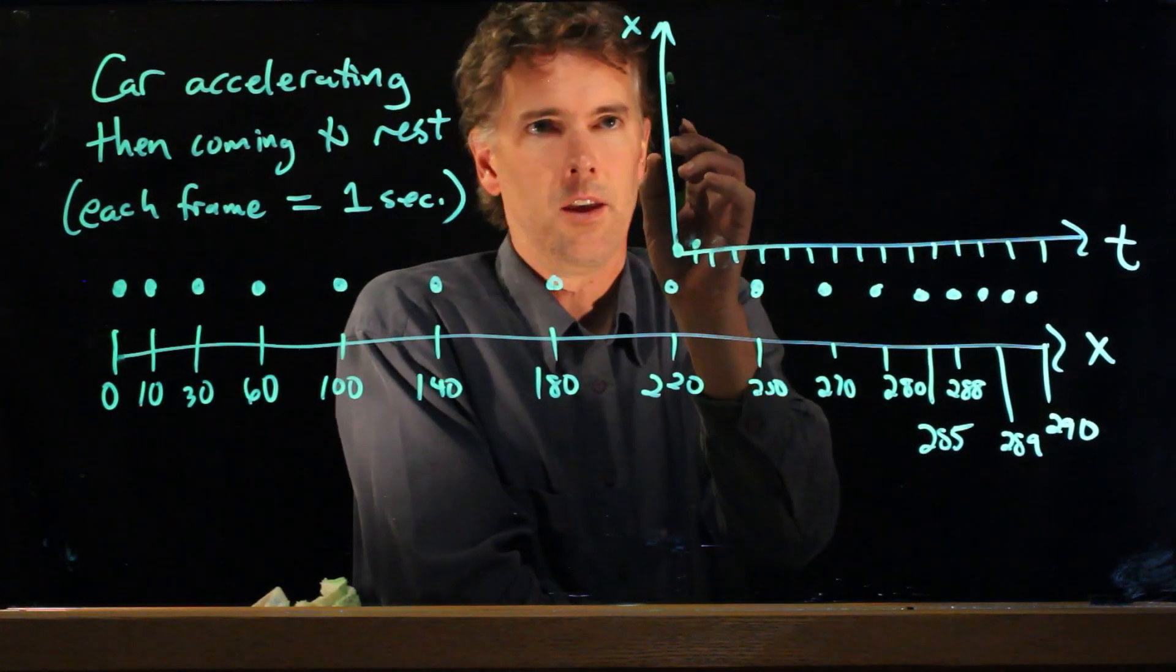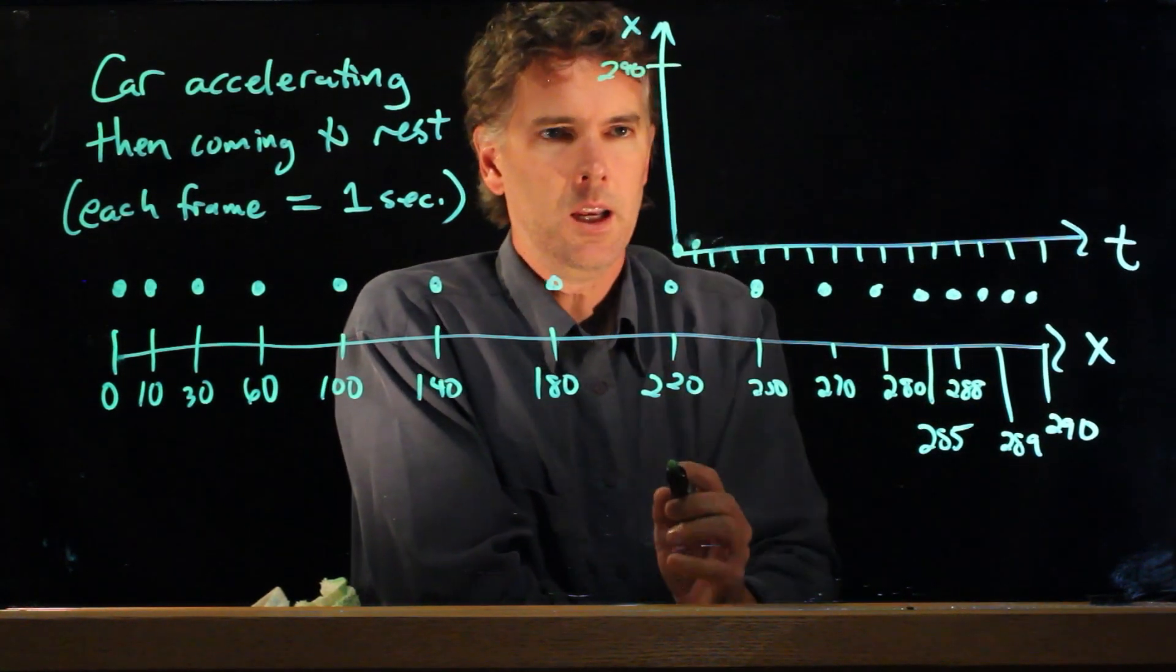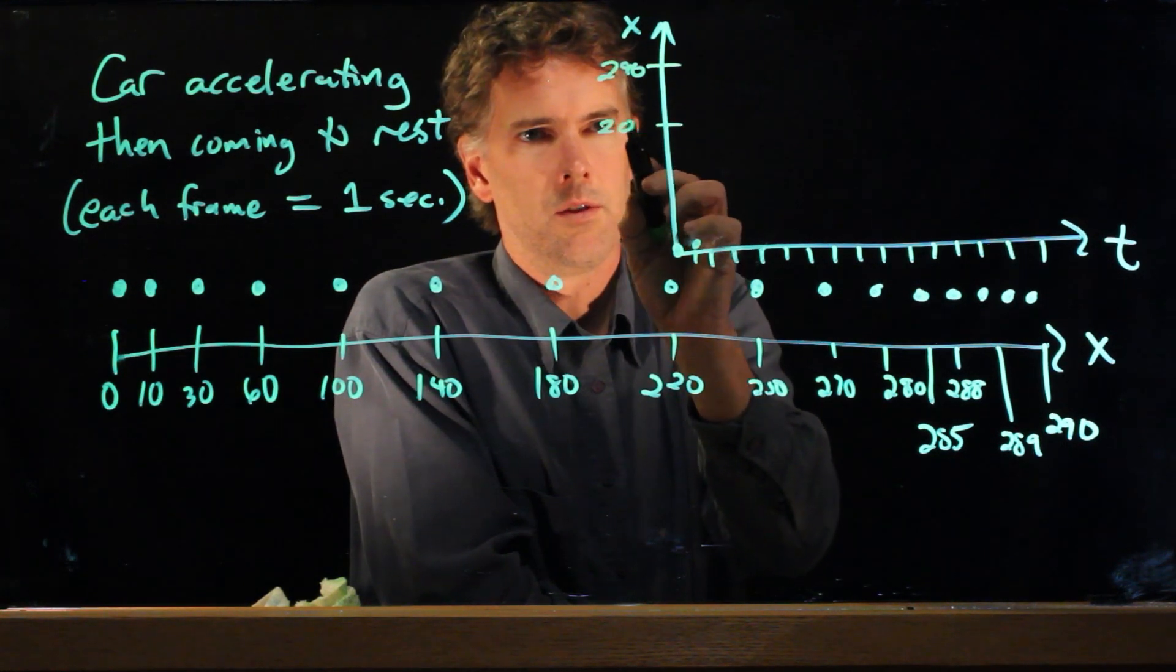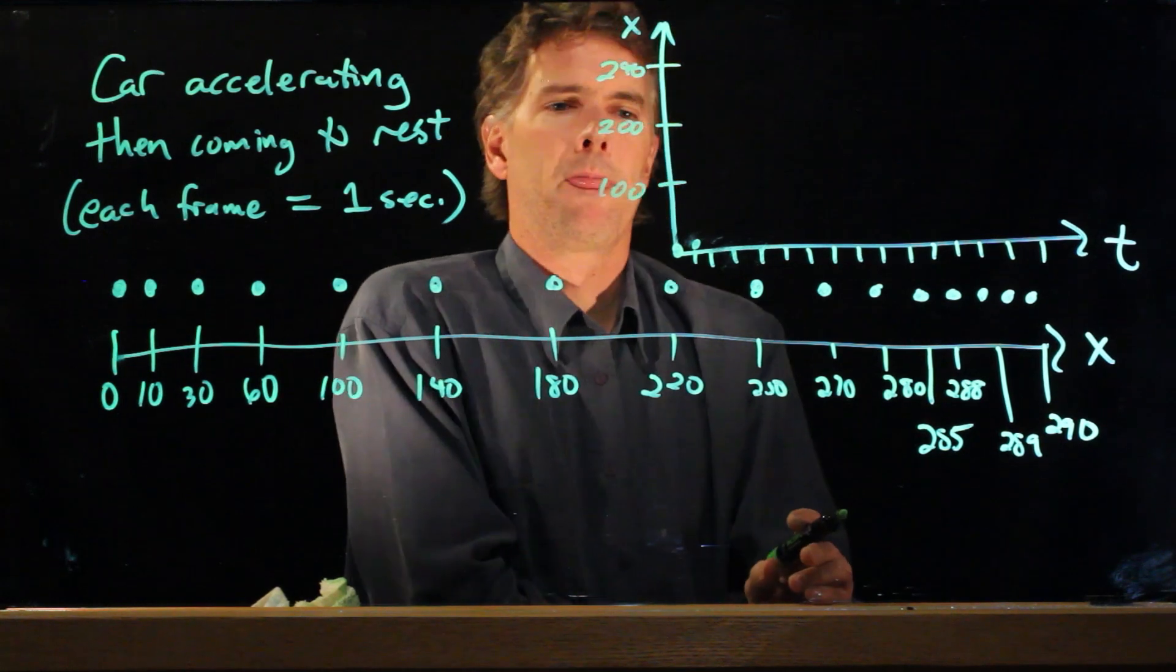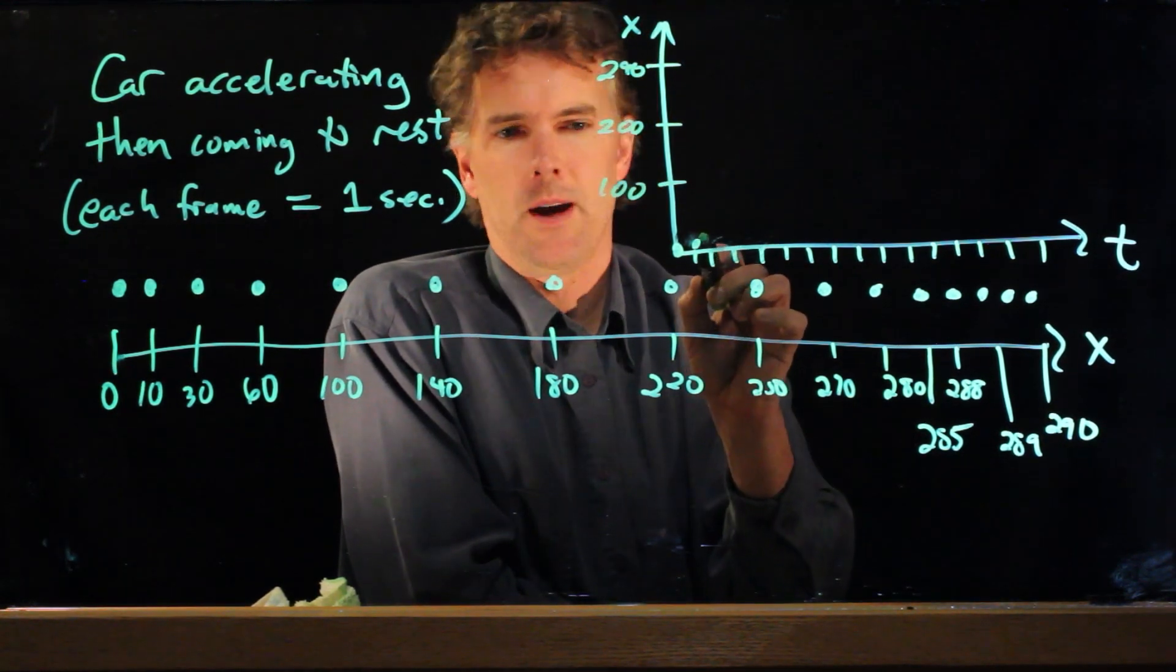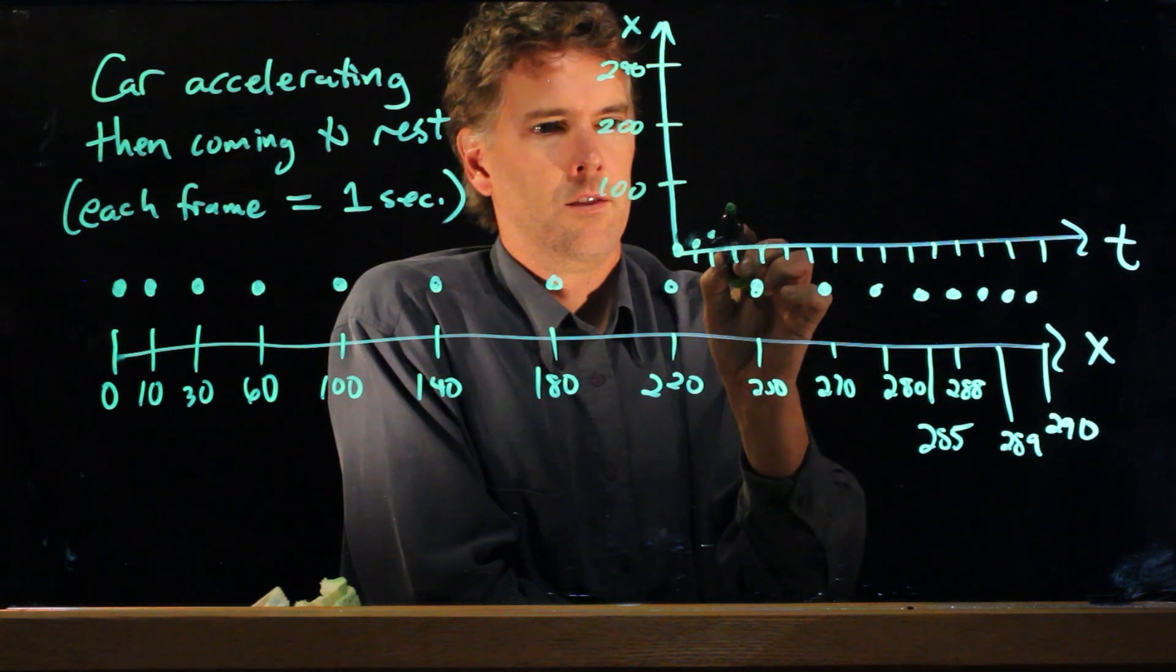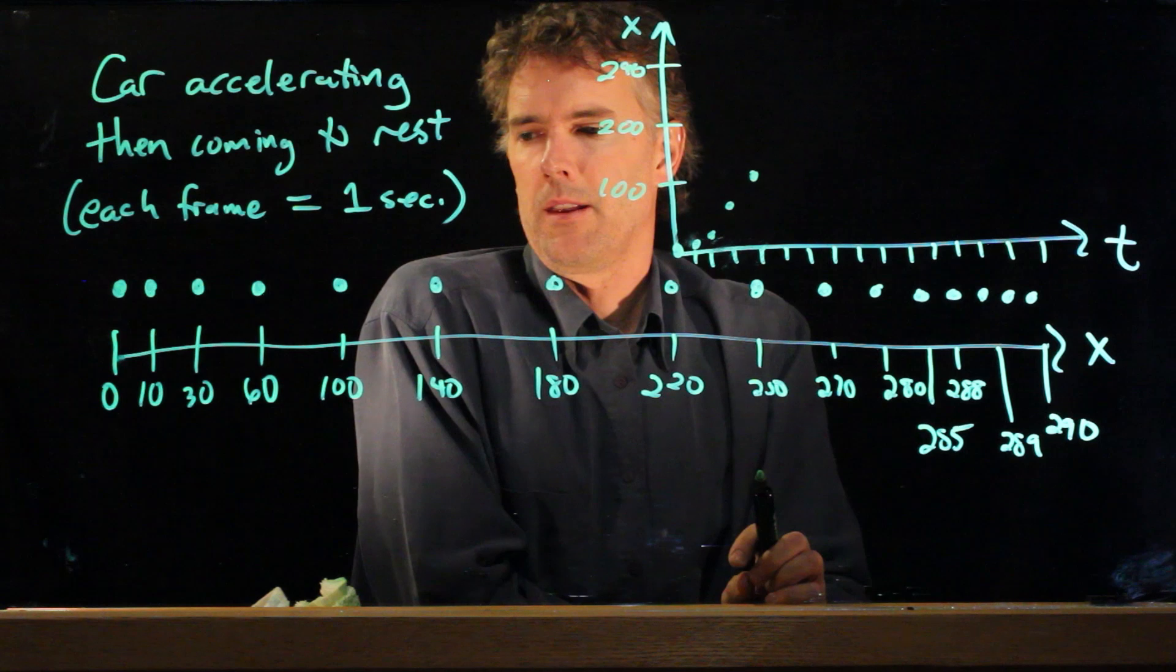And let's say that this is the ending point, 290, which means that this is roughly 200. This is 100, something like that. All right, so 10 would be about there. 30 is the next point. 60 is the next point. 100 is at that point right there.